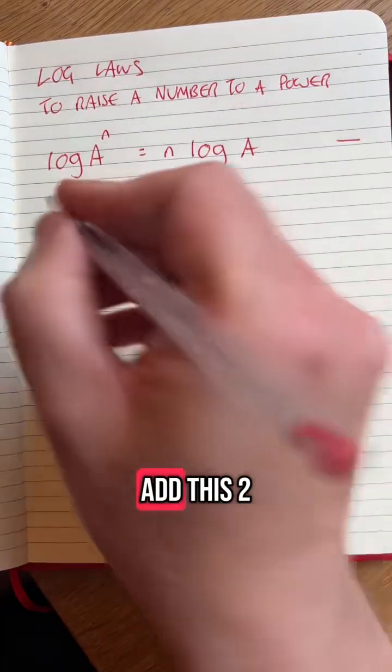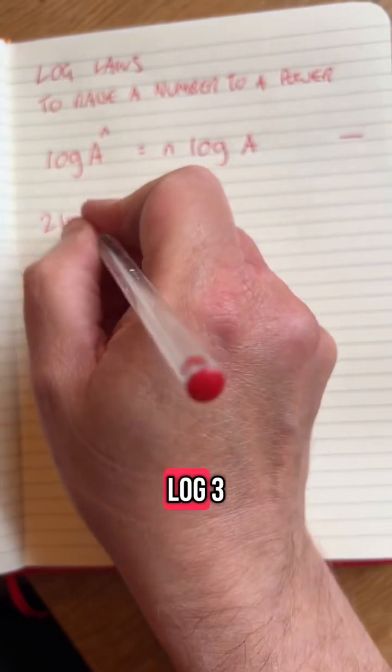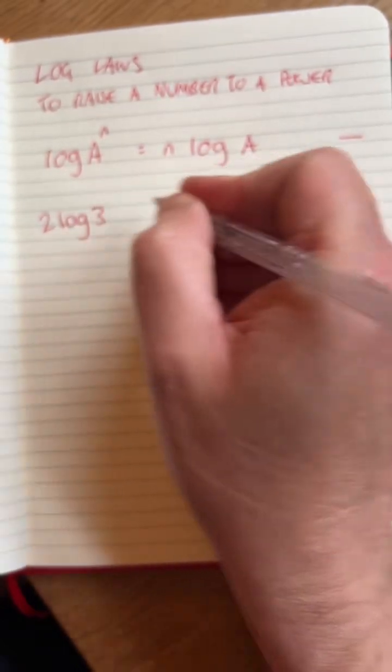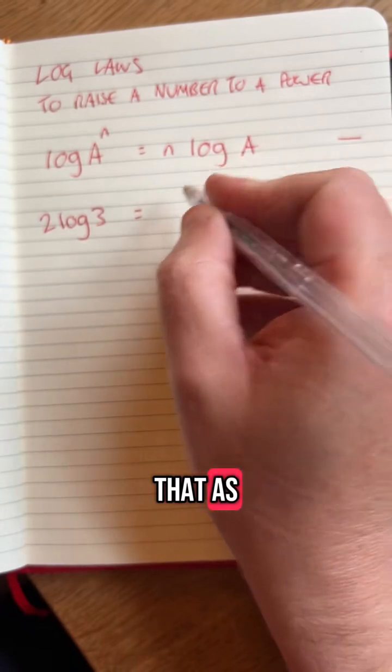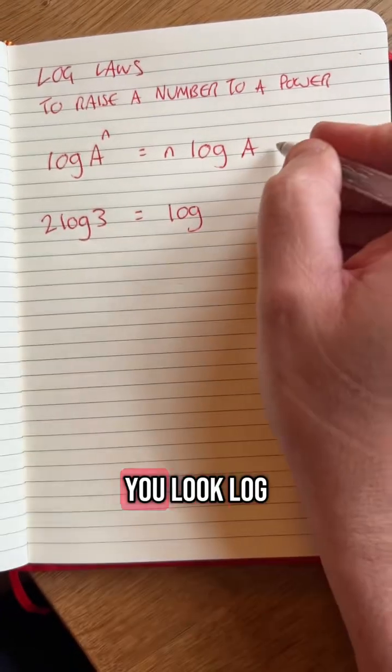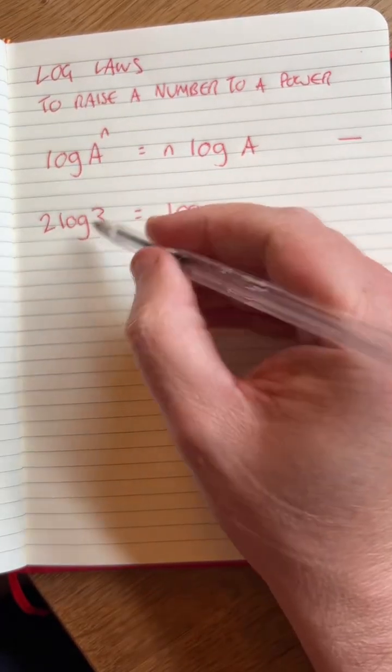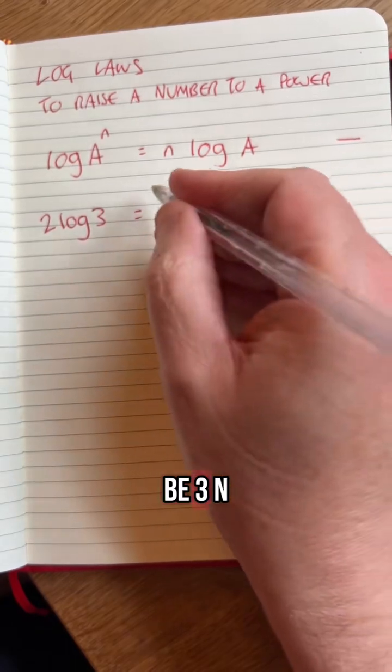Last one for that. So if I have this 2 log 3, I can write that using this law. Log A is going to be 3, n is going to be 2.